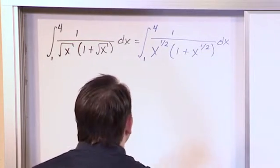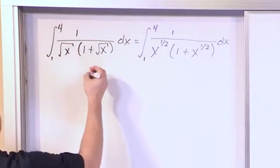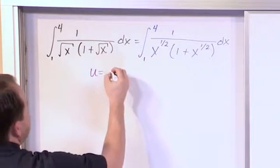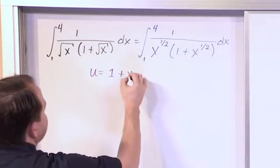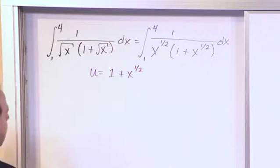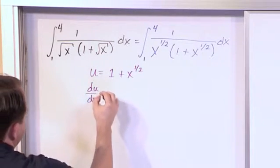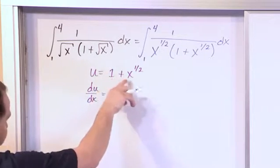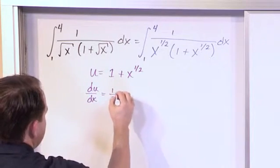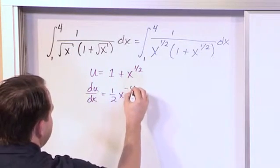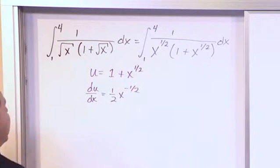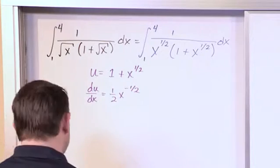So, for now, let's go ahead and say that u will indeed be equal to 1 plus x to the 1 half. Then du dx, the derivative of this with respect to x, this will be zero. This will be 1 half times x to the negative 1 half, because we take 1 minus the exponent. And 1 half minus 1 is negative 1 half.